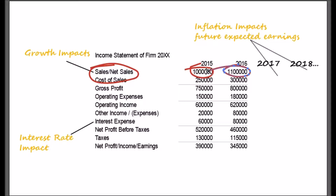Real values in economics are those that are adjusted for inflation. The higher the inflation, the lower the real value. Since stocks can be priced as the present value of future dividends, the lower the real future cash flows due to an increase in inflation, the lower the present value.